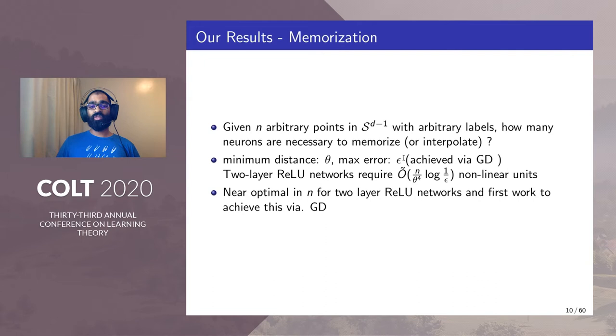This is near optimal in n for a two-layer ReLU network, and this is the first result to achieve this via gradient descent.